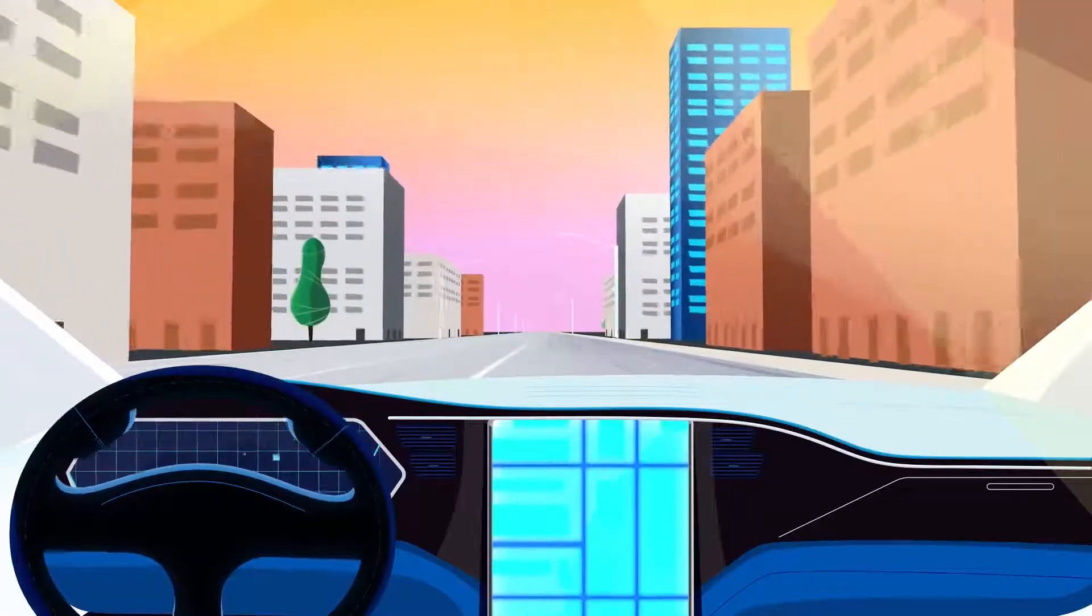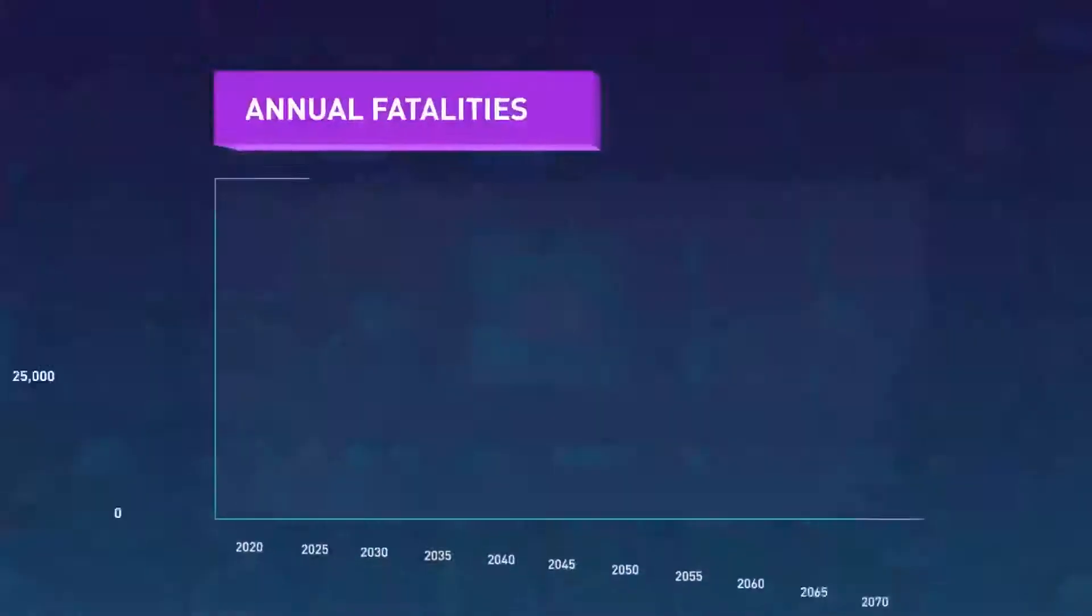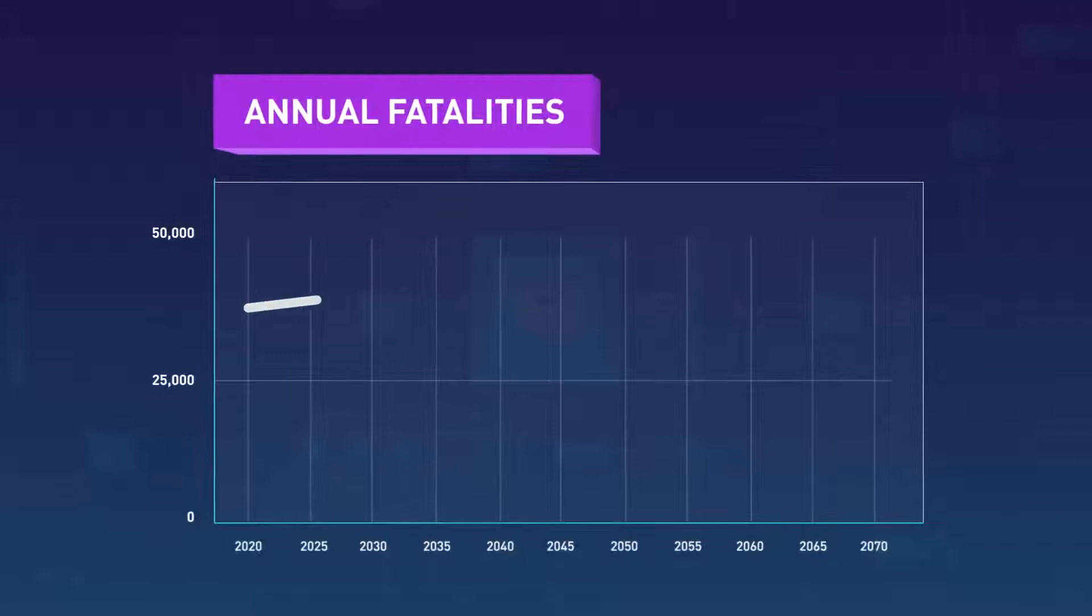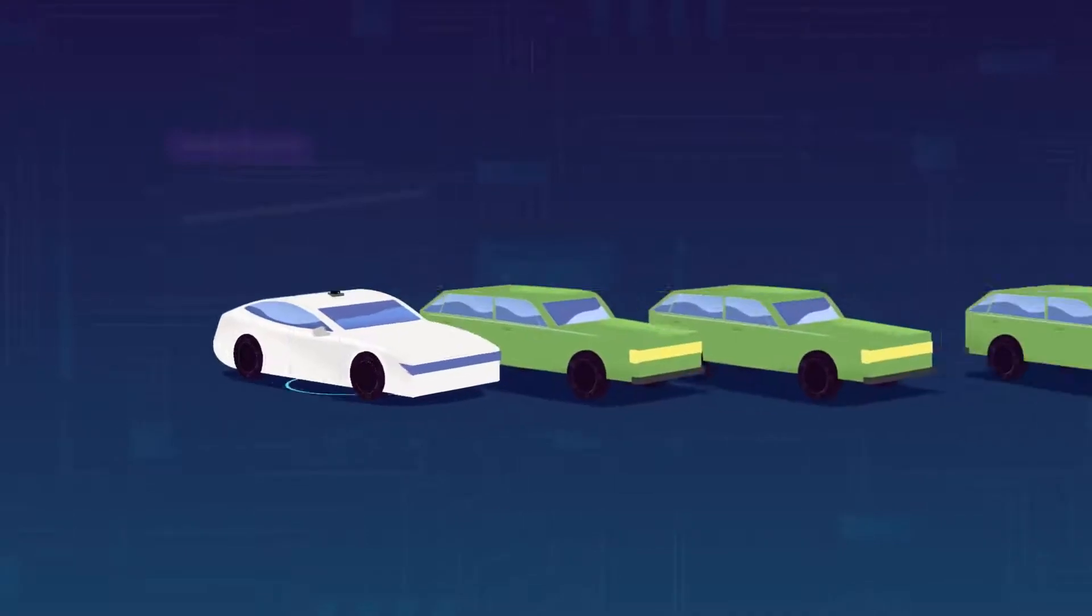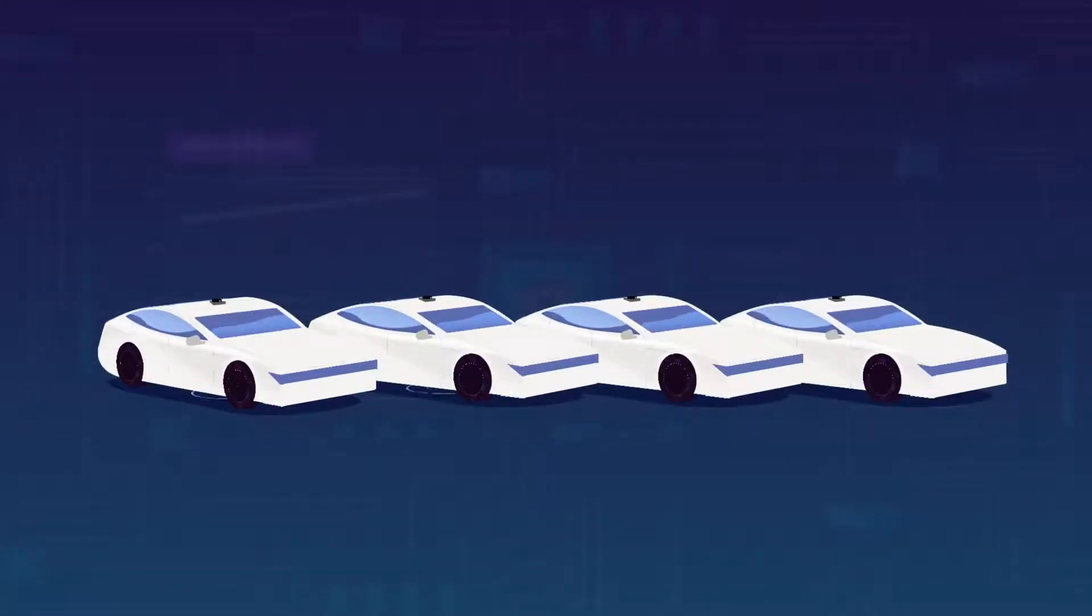So which plan is safer? To find out, we have to project future road fatalities if AVs were never introduced. Next, we estimate how quickly developers can improve AVs after they've been introduced, and how quickly conventional vehicles get replaced.